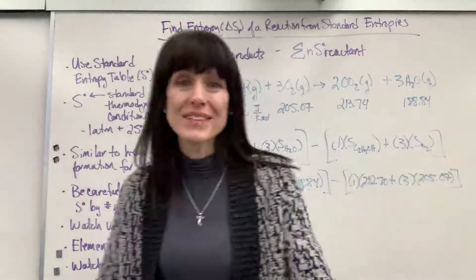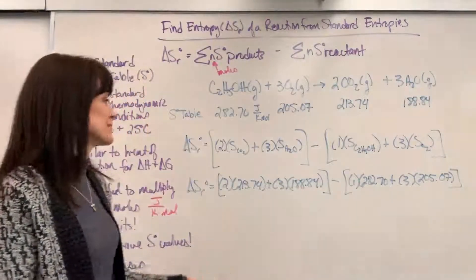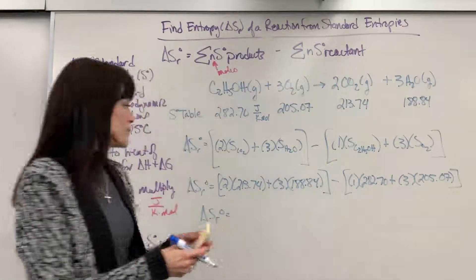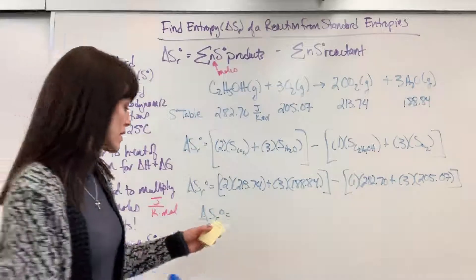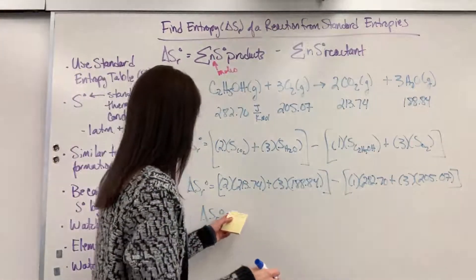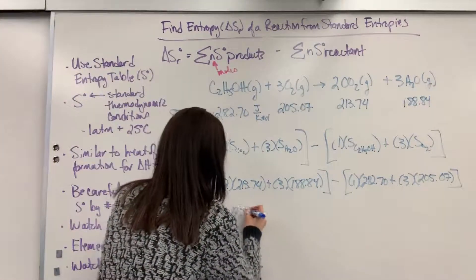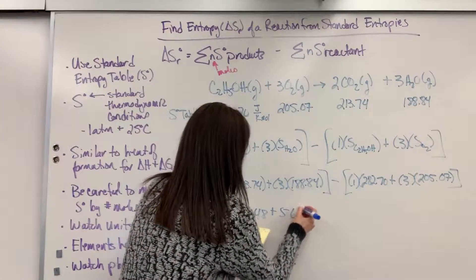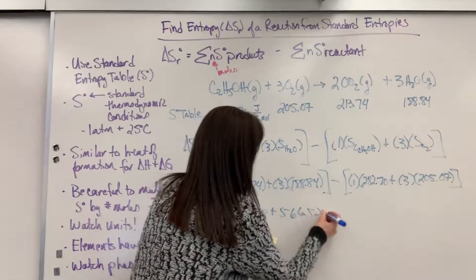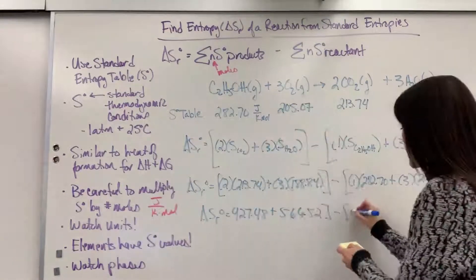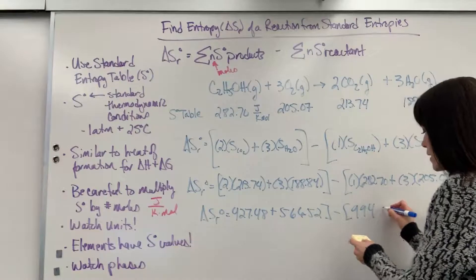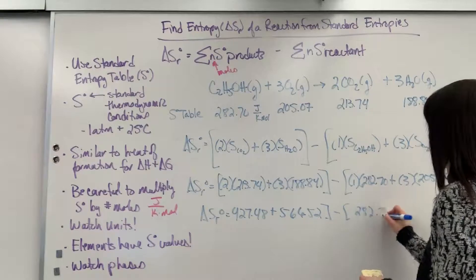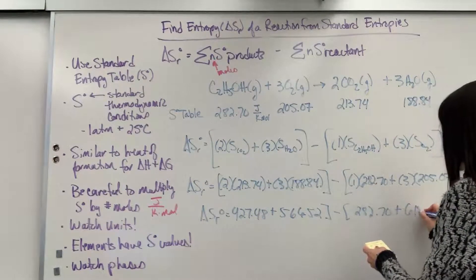Okay, now we just need to do some easy calculations. Let me write out a couple of steps here for you. When we take the two times our, let's see, 213, we're going to get 427.48, plus 566.52, minus, we'll have the 282.70, plus 615.21.